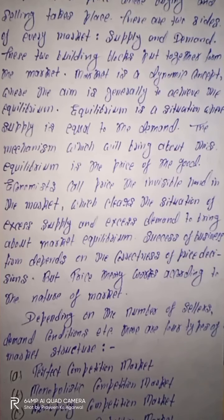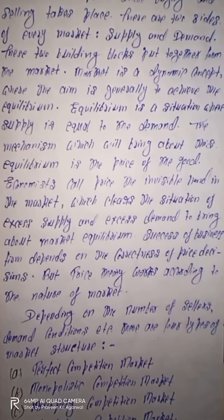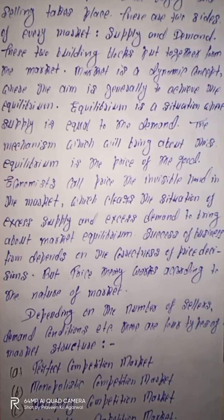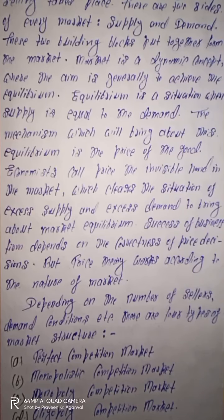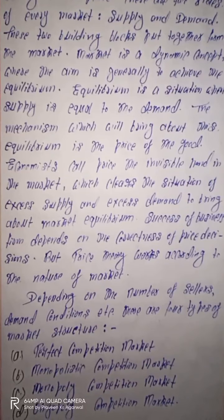तो एक ऐसी situation चाहिए होती है market को जहां supply और demand दोनों equal होते हैं, और जब supply और demand equal होते हैं उसके basis पर जो price determine होता है वो कहलाता है equilibrium price। इस particular price पर buyers और sellers दोनों agree हो जाते हैं अपने product को sale करने के लिए। Economics के according यह price market में एक invisible hand की तरह होता है जो excess supply और excess demand की situation को properly balance करता है और उस तरीके से market में equilibrium की position create होती है।